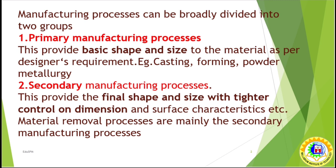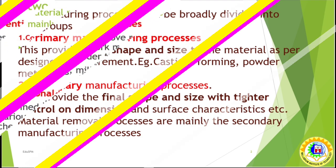Manufacturing processes can be broadly divided into two groups. The first one is primary manufacturing process and the second one is secondary manufacturing process. In primary manufacturing process, it basically provides basic shape and size, like casting, forming, and forging. In secondary manufacturing process, it provides final shape and size with tighter control on dimension, and different machining processes fall under this category.